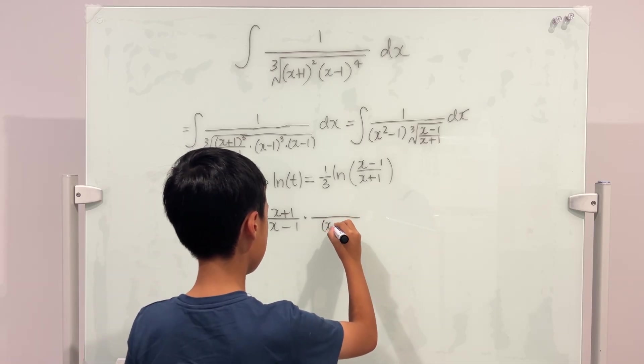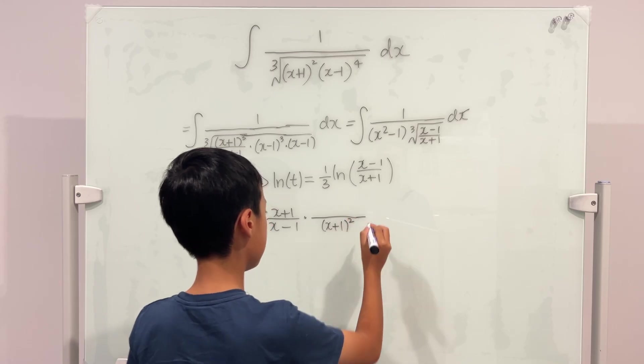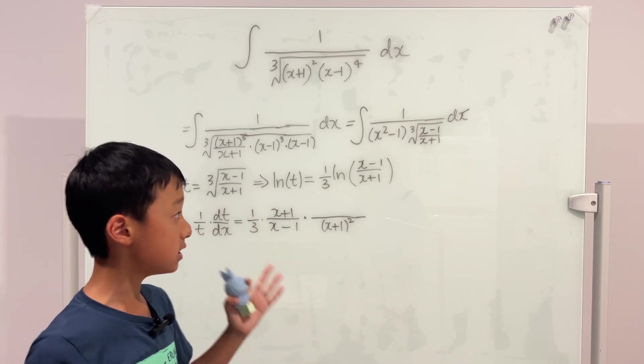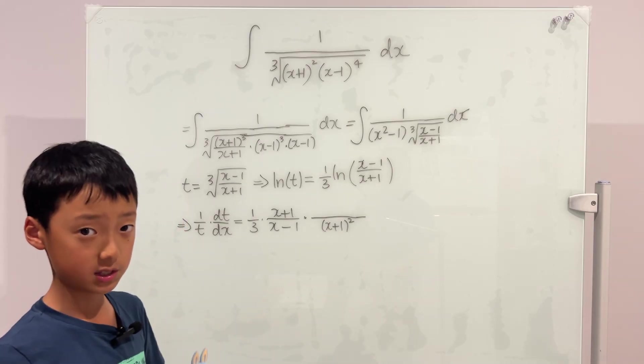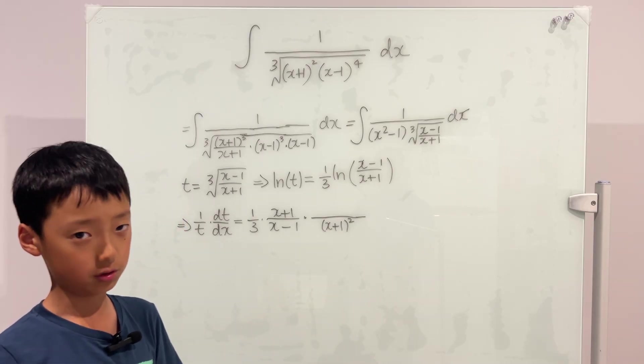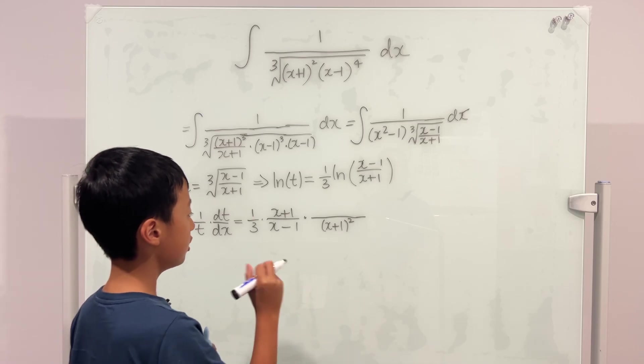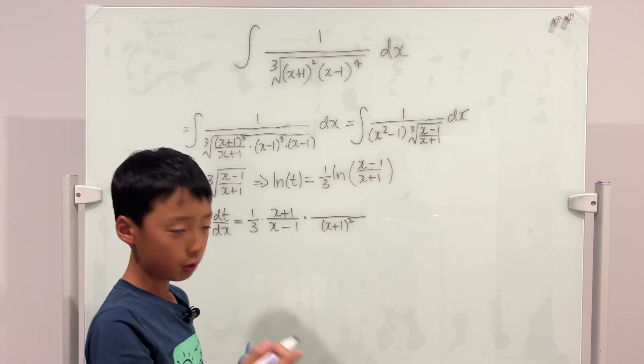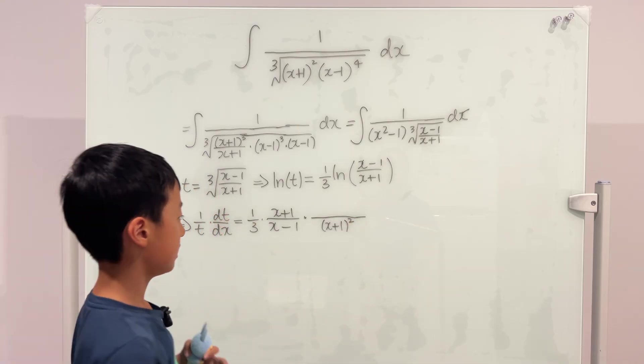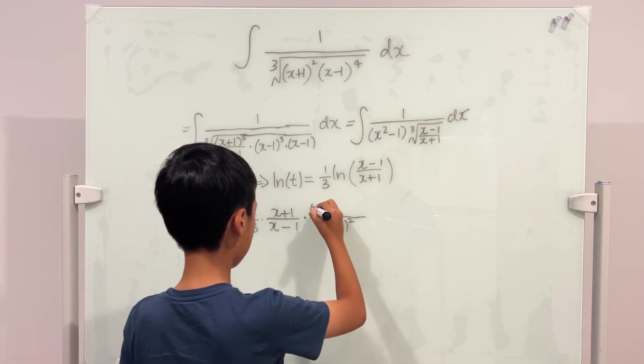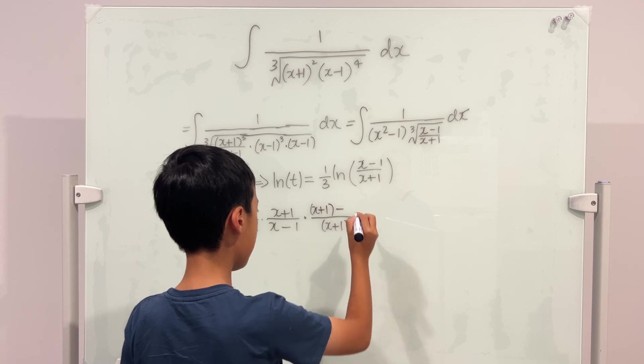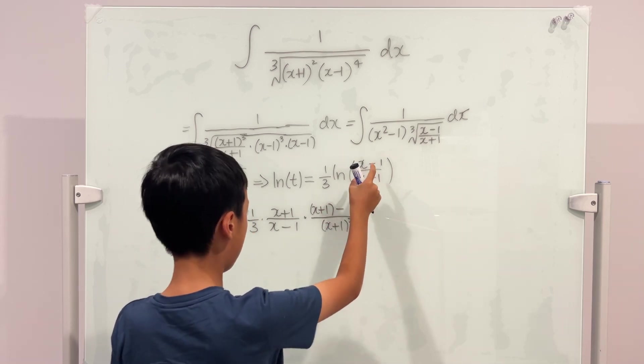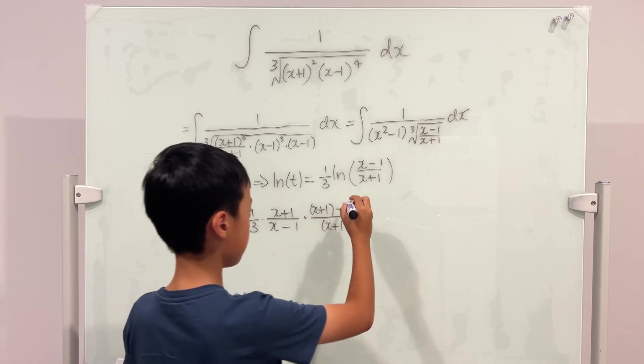The quotient rule says we take the derivative of the top which is 1 multiplied by the bottom which is x plus 1, so it's just x plus 1 minus the derivative of the bottom times the top which is x minus 1.